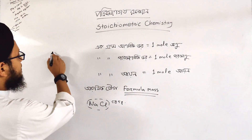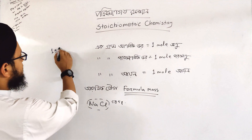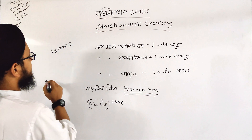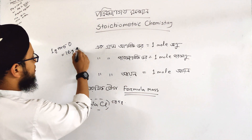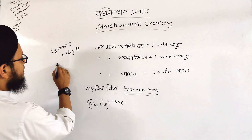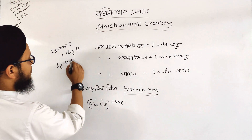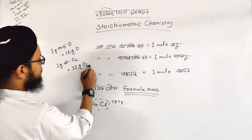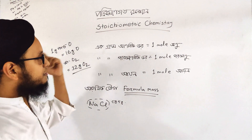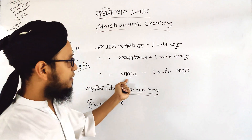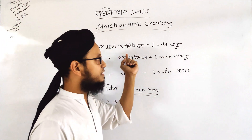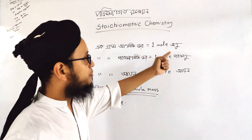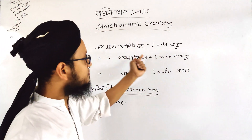This is 1 gram of iron, meaning 1 gram of oxygen. This is 6 grams of oxygen. This is 1 gram of iron meaning 3 grams of oxygen. This is 1 gram of iron meaning 1 mole.